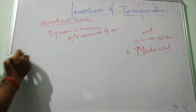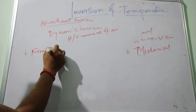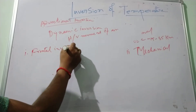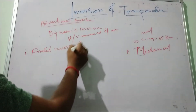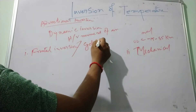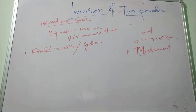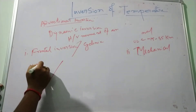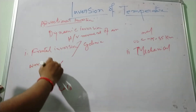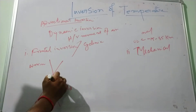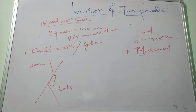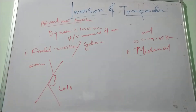The advectional inversion has been divided into frontal inversion, which is also known as cyclonic inversion. When temperate cyclones are formed due to the convergence of warm and cold air masses in the northern hemisphere, the warm air is pushed up by the cold polar air, and thus warm air lies over the cold air. In that case, the inversion of temperature occurs.